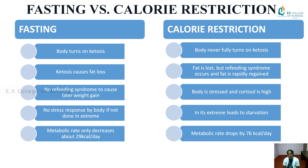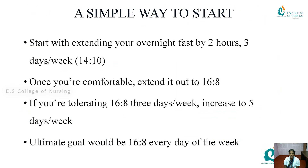Now let's differentiate fasting versus calorie restriction. In fasting, the body turns on ketosis, which causes fat loss, with no refeeding syndrome to cause later weight gain. In calorie restriction, the body never fully turns on ketosis; fat is lost but refeeding syndrome occurs and fat is rapidly regained. Body stress and cortisol are high in fasting extremes, whereas calorie restriction causes no stress response if not done to extremes. The metabolic rate decreases about 29 kilocalories per day in fasting, but drops by 76 kilocalories per day with calorie restriction.